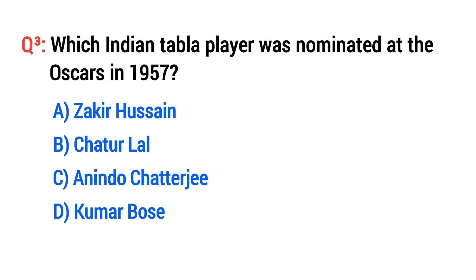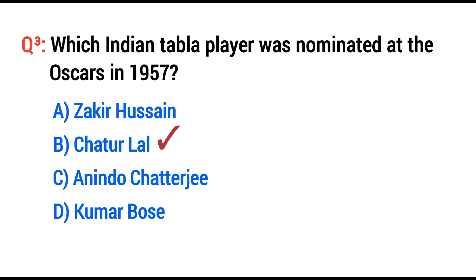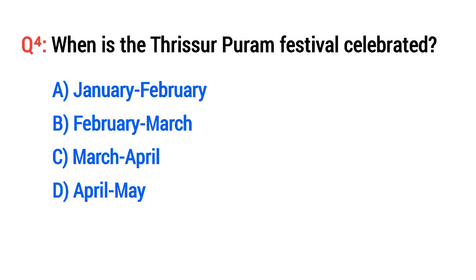The right option is B: Chatur Lal. Question number four: When is the Thrashing Borum festival celebrated? The right option is D: April to May.